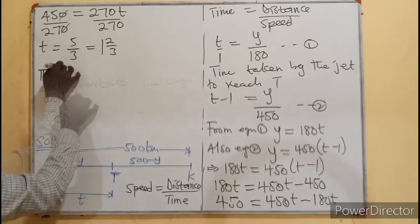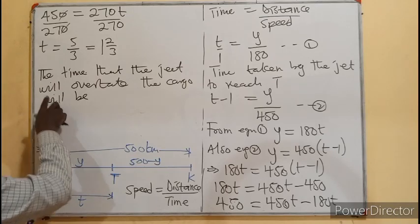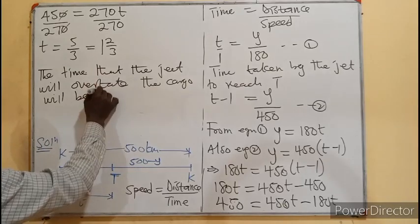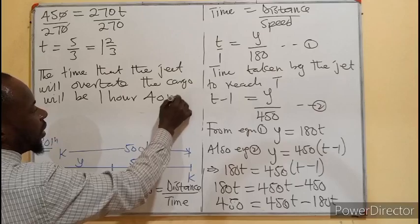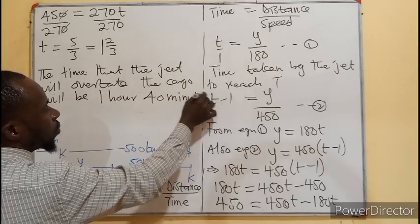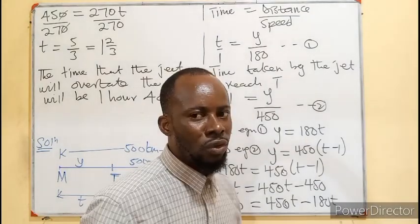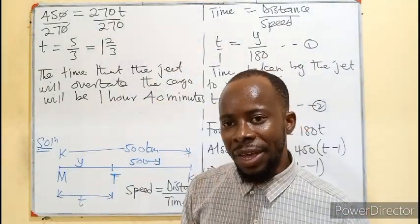The time that the jet will be taking in order to overtake the cargo plane is going to be 1 hour 40 minutes. That will mean 1:40 PM will be the time.